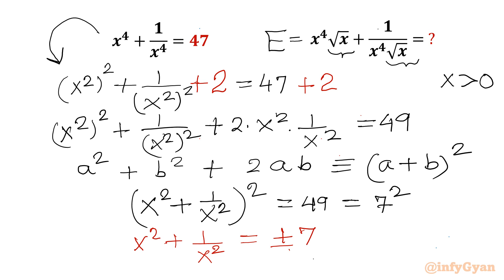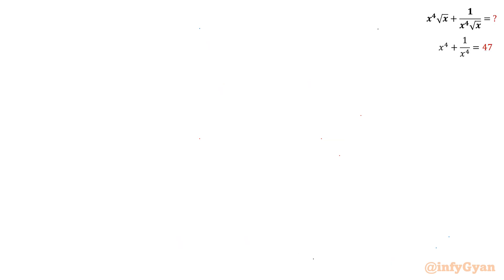We reject the negative value because x² + 1/x² is a sum of two squares and cannot be negative for real x. So the accepted solution is x² + 1/x² = 7.